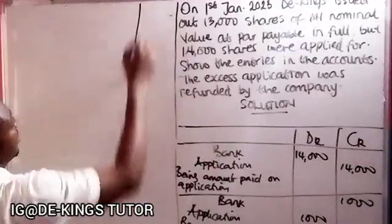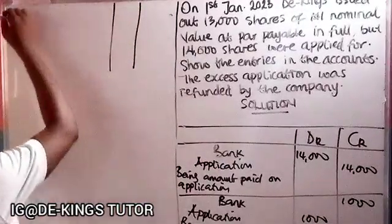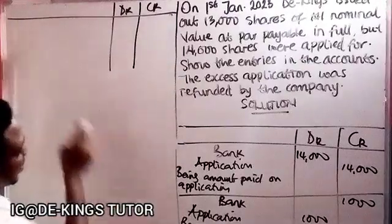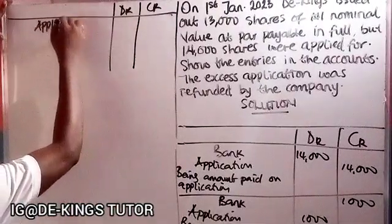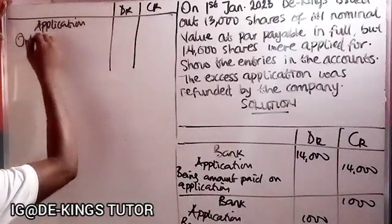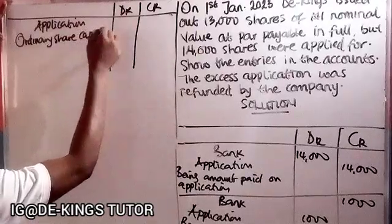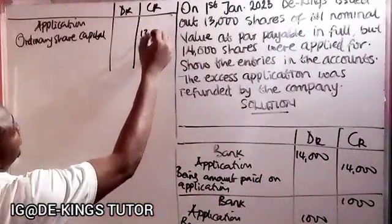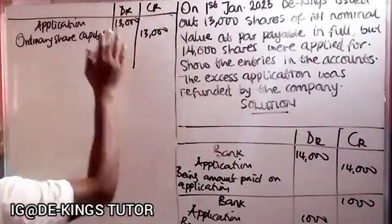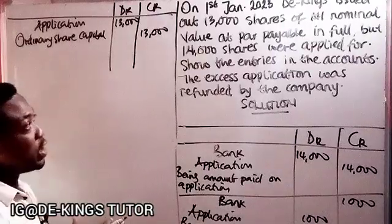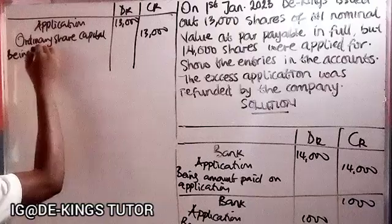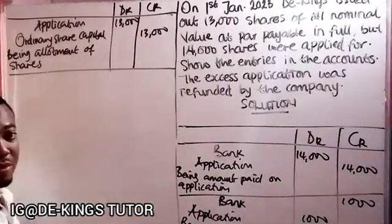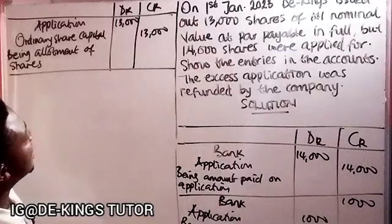For the allotment of shares, the ordinary share capital is credited based on the face value. The actual amount allotted is 13,000 shares, so the ordinary share capital is credited 13,000, and the application account is debited 13,000. Narration: being allotment of shares.